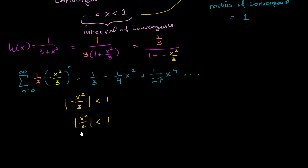One thing that might jump out at you is that x² is going to be non-negative no matter what. So this is another way of saying that x²/3 has to be less than 1.